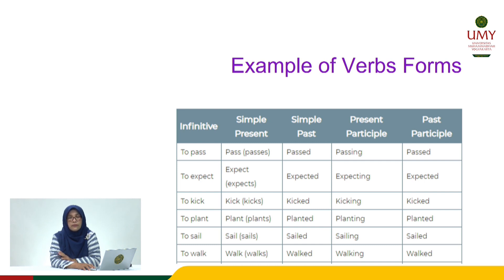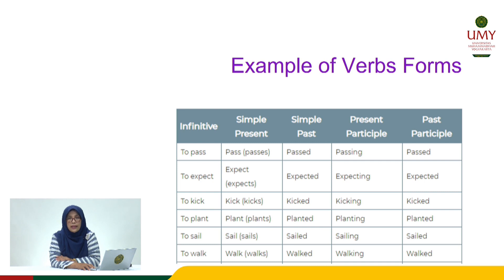Do you know how to use these verb forms? Looking at the table, for example from line one, you see the verb in the infinitive form, then in the simple present or present depending on the subject, then in the past form, then in the past participle form. From the verb 'expect': the infinitive is 'to expect,' the simple present is 'expect' or 'expects,' the past simple is 'expected,' the -ing form is 'expecting,' and the past participle is 'expected.'